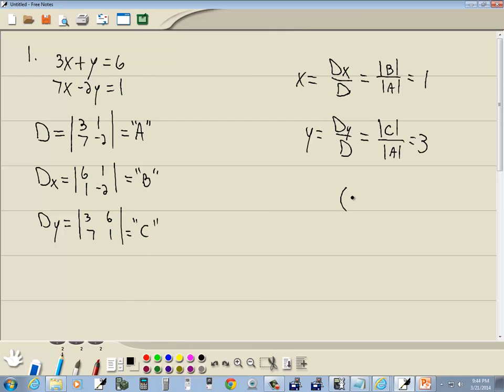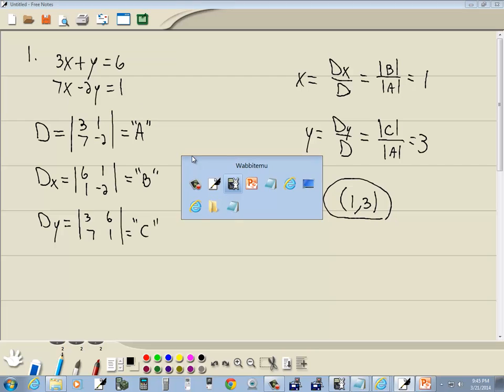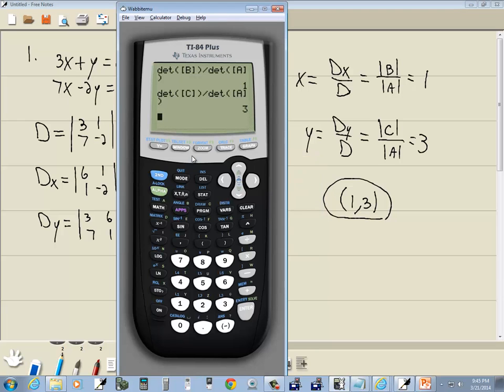So our answer to the system of equations using Kramer's rule with the calculator is 1, 3. Now we know it's pretty straightforward to find a determinant of a 2 by 2 matrix, but imagine a 3 by 3 or 4 by 4 and how much time this would save using the calculator. Of course we could use our REF and been done a while ago. So anyway that's using Kramer's rule on a TI-84 plus calculator.